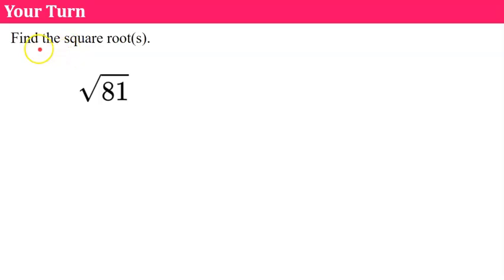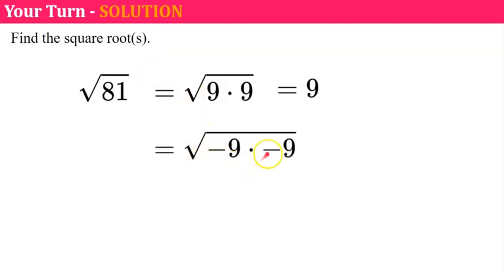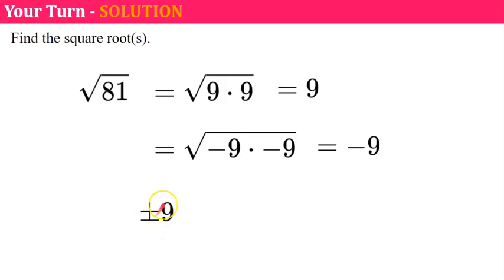Let's practice. Find the square roots of 81 — pause the video and come back when you're ready. The square root of 81 equals the square root of 9 times 9. Since 9 multiplied by itself equals 81, the square root is 9. Since negative 9 times negative 9 is also positive 81, the square root of 81 is also negative 9. So we have two roots: positive 9 and negative 9, which can be written as ±9.